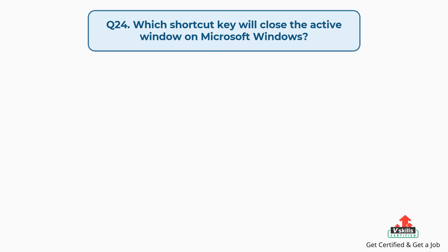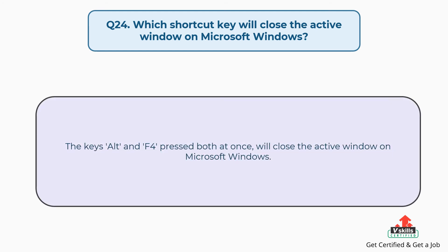Question number twenty-four: which shortcut key will close the active window on Microsoft Windows? The answer is, the keys ALT and F4 pressed both at once will close the active window on Microsoft Windows.